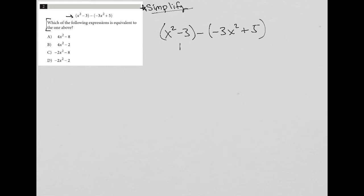So to simplify this, this x squared minus three just comes down because there's no like terms within the parentheses. However, here I do need to distribute this negative sign. So three x squared, distribute this negative sign there and there, which means I'm going to have a positive three x squared because negative times negative three x squared is positive three x squared. And then negative times positive five is negative five.